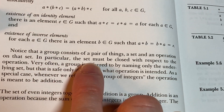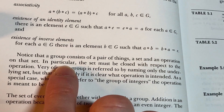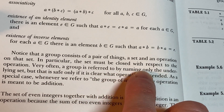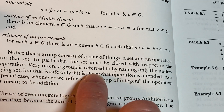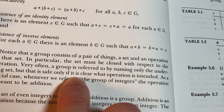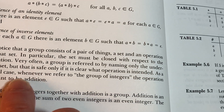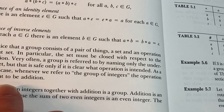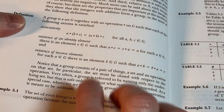Notice that a group consists of a pair of things: a set and an operation on that set. In particular, the set must be closed with respect to the operation. Very often a group is referred to by naming only the underlying set, but that is safe only if it is clear what operation is intended. As a special case, whenever we refer to the group of integers, the operation is meant to be addition.